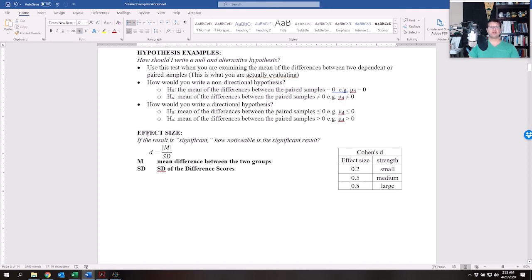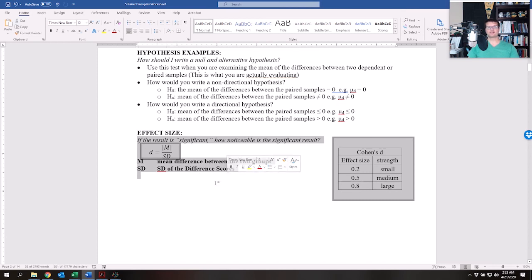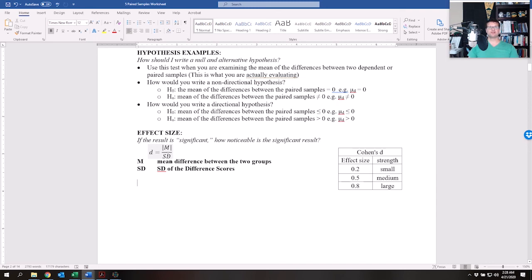The effect size, this has got to be the easiest effect size to calculate. You literally take the absolute value of the mean difference and you divide it by the standard deviation of the mean difference.